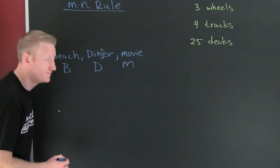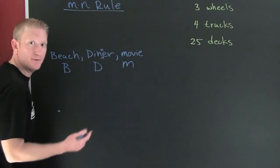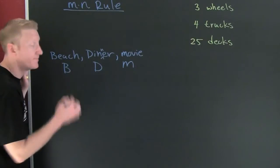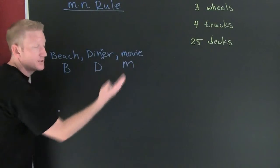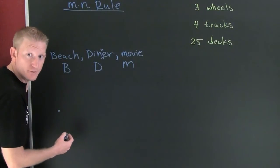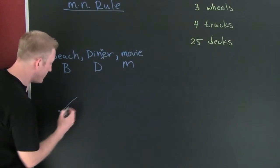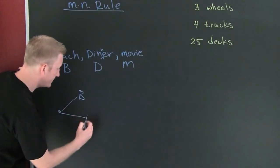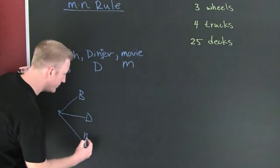You start out at home. You have three possibilities — three options for the first part of your date. You can go to the beach, you can go to dinner, or you can go to the movie.